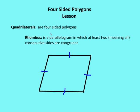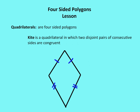A rhombus is a parallelogram in which at least two — meaning all — consecutive sides are congruent. So a rhombus has all consecutive sides congruent, and it is also a quadrilateral. A kite is a quadrilateral, but not necessarily a parallelogram, in which two disjoint pairs of consecutive sides are congruent. As the name indicates, it looks like a kite, and there are more features about kites we'll learn later.